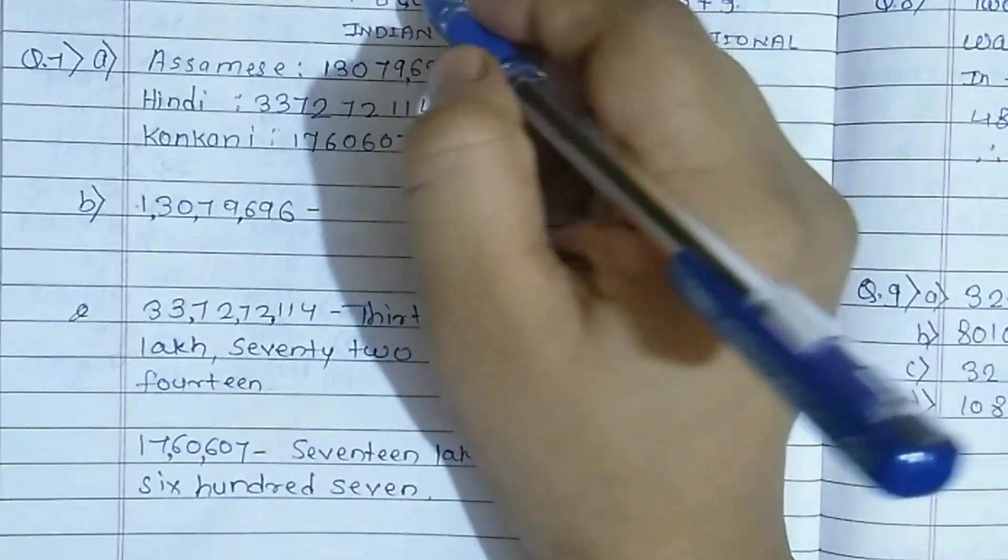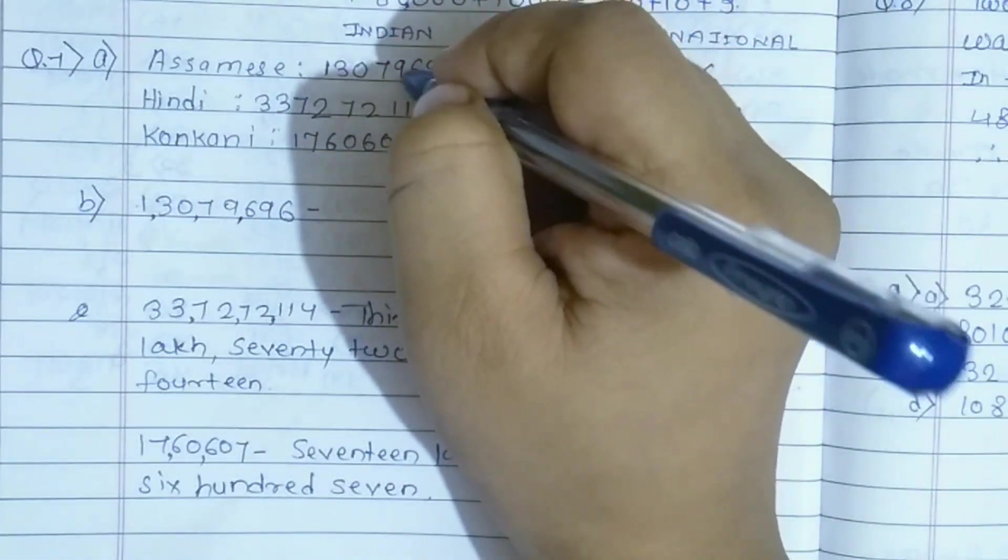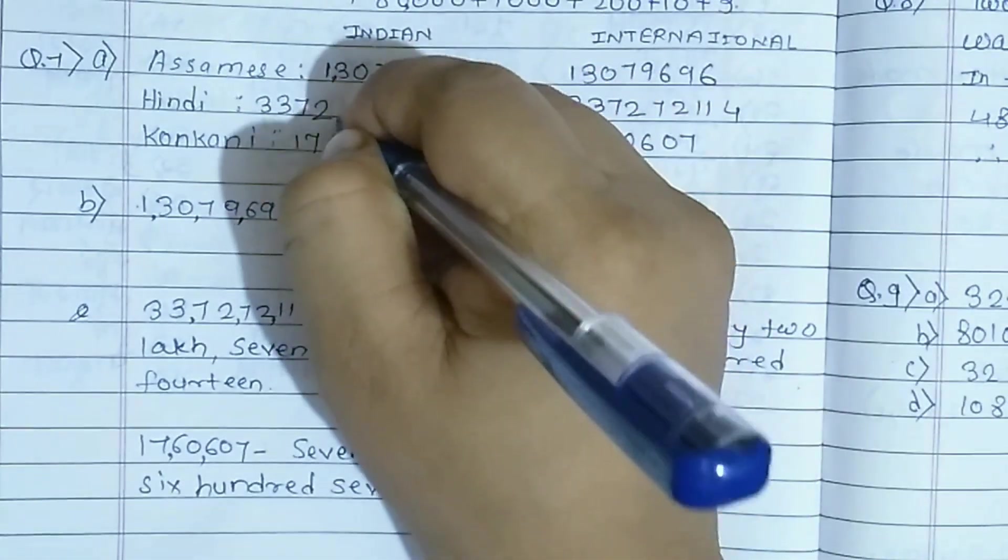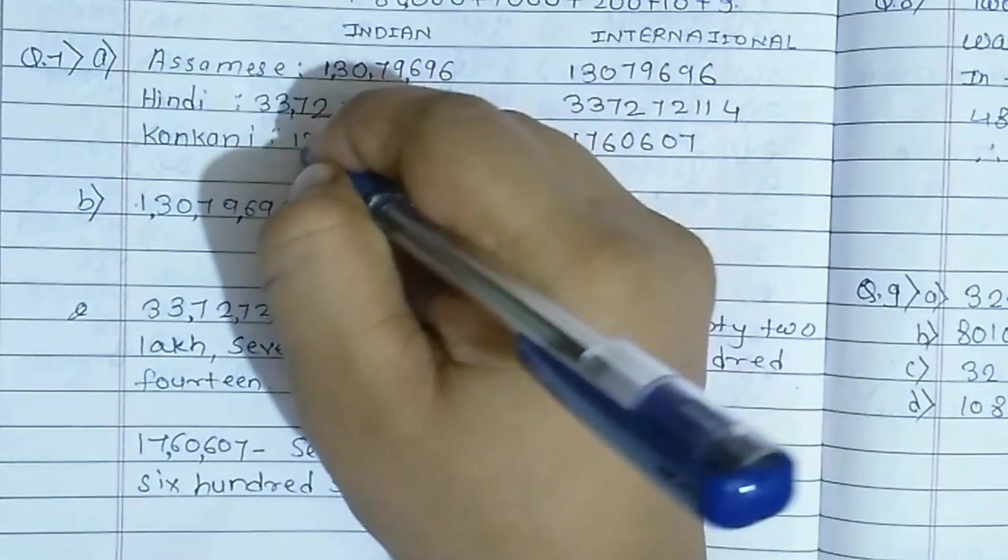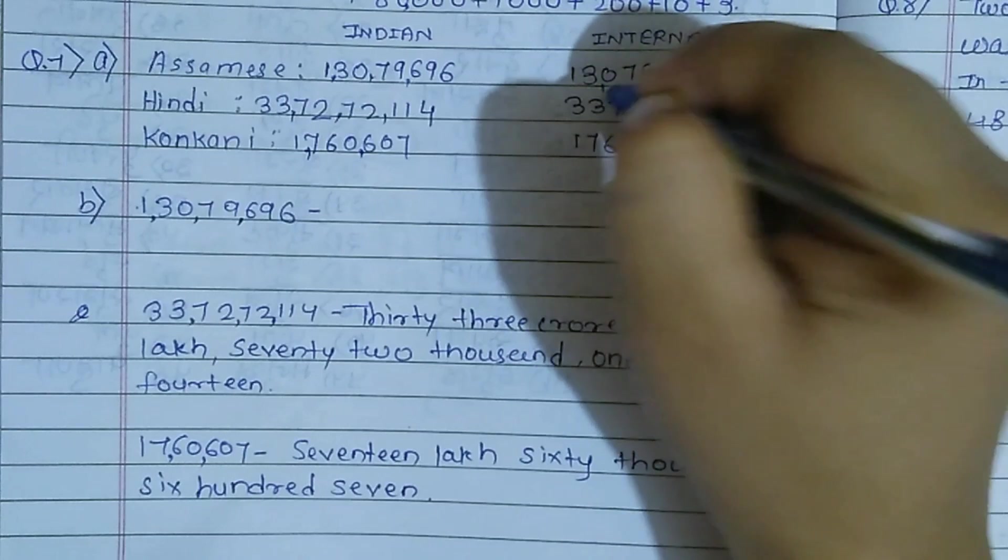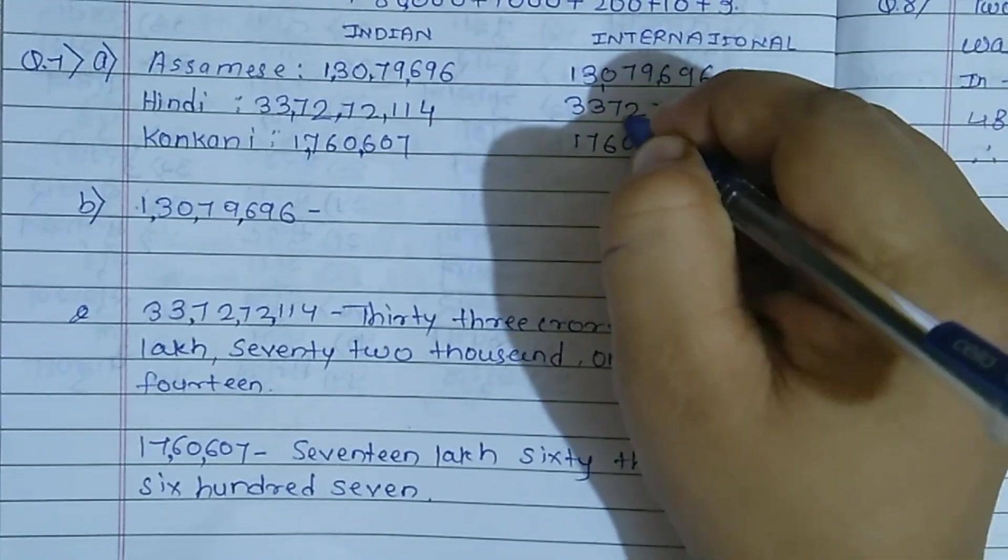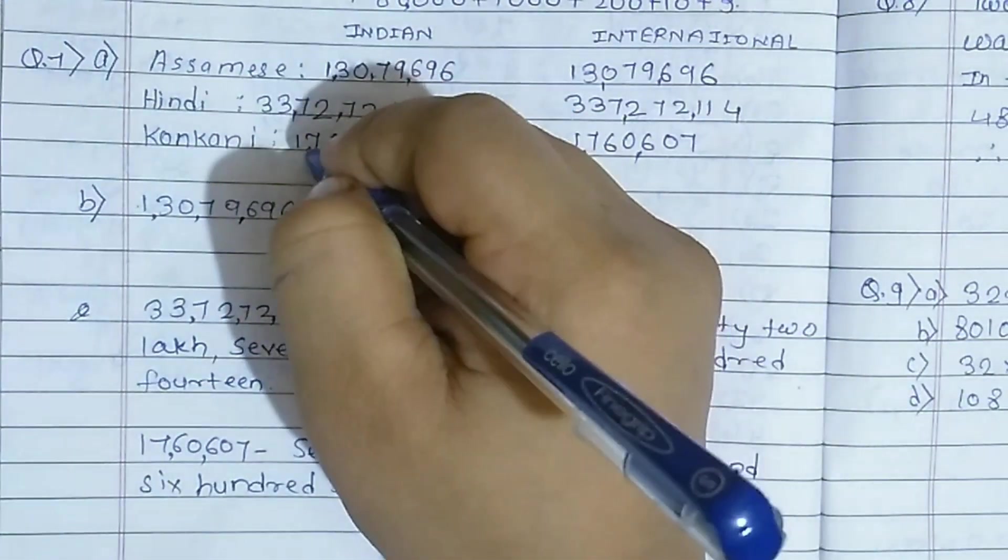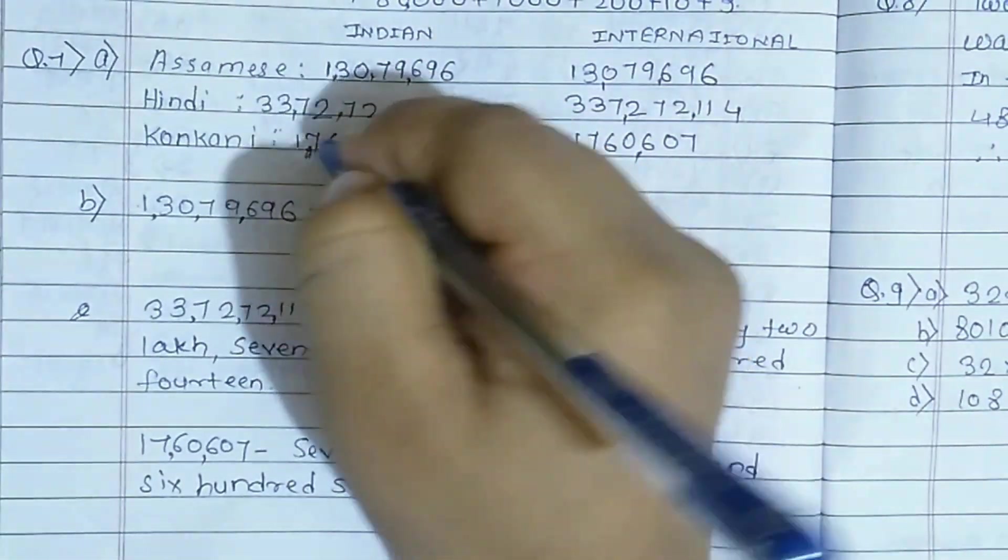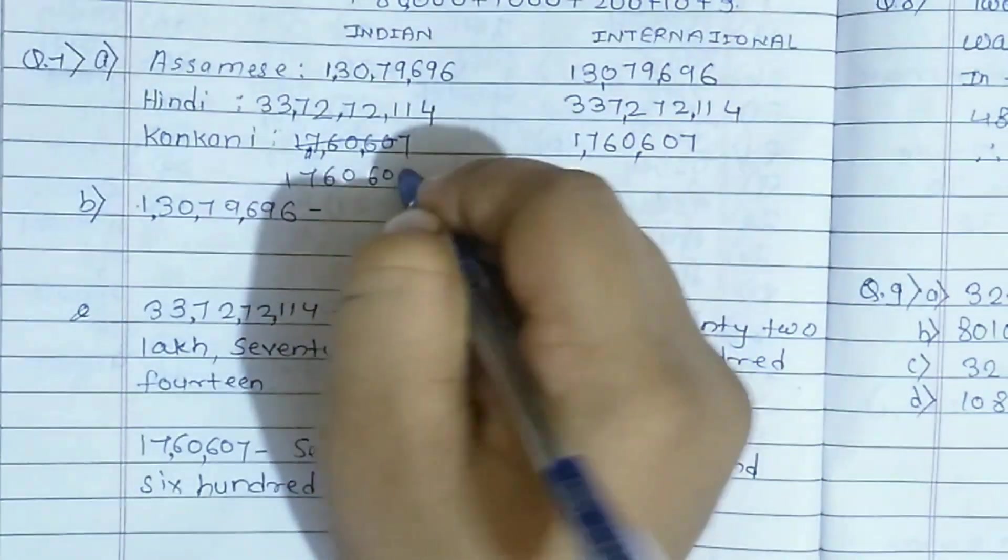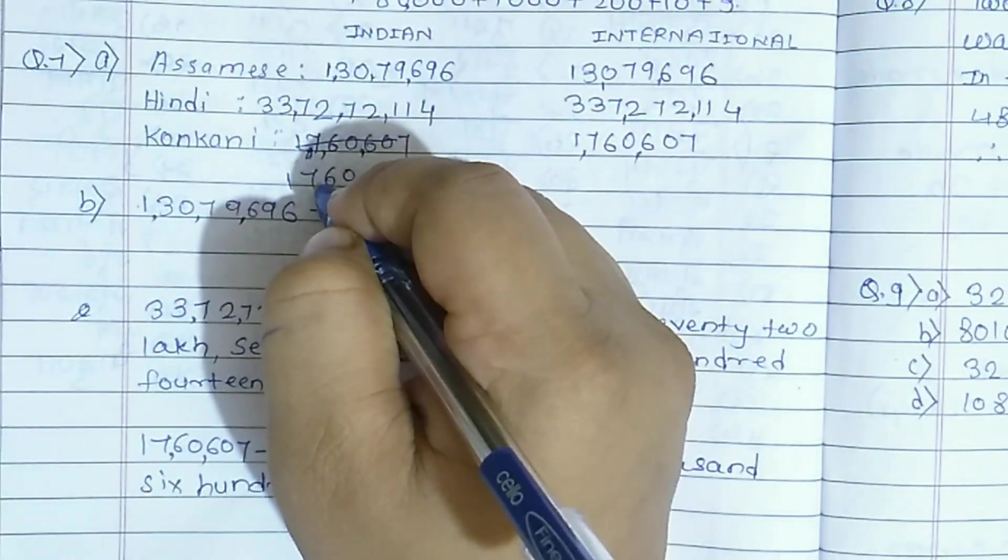So I have written all three numbers. First in Indian system: 3 digits, then comma. And in international system, every 3 digits comma comes. This is wrong here, see, it should come here. How will it come? Then I'll write it here, then here.